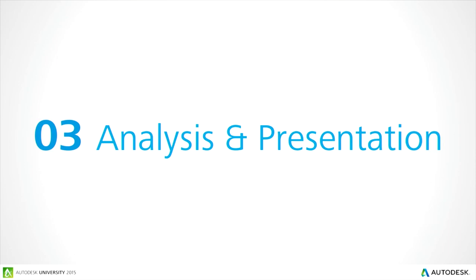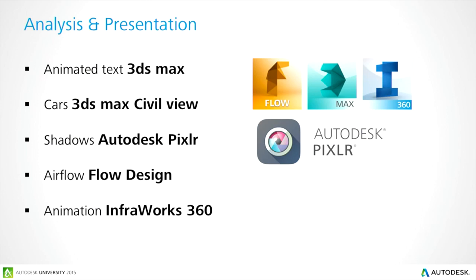The final part is analysis and presentation. We'll cover 3ds Max for animated text, cars using the Civil View add-in to 3ds Max, shadow overlays comparing Tower Option 1 and Tower Option 2 using Autodesk Pixlr, the Autodesk Airflow application (based on Project Falcon technology) for bringing your building in as FBX and looking at wind-wake around your design, and finally the animation output which can be done in minutes inside InfoWorks 360.